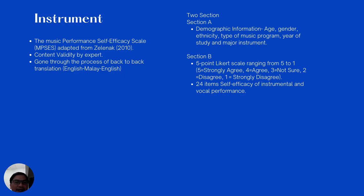The instrument used in this study was the Musical Performance Self-Efficacy Scales. This instrument was validated by experts and went through the process of back-to-back translation between English and Malay. The questionnaire consists of two sections: Section A contains demographic information including age, gender, ethnicity, type of music program, year of study, and major instrument. Section B uses a five-point Likert scale ranging from one to five — five being strongly agree, four agree, three not sure, two disagree, and one strongly disagree. The total number of items in this instrument is 24.